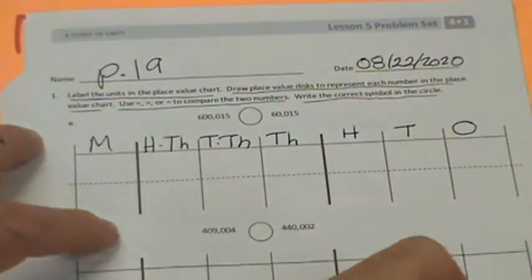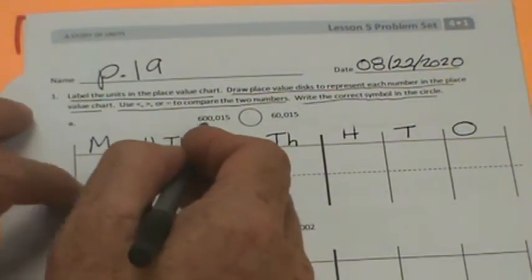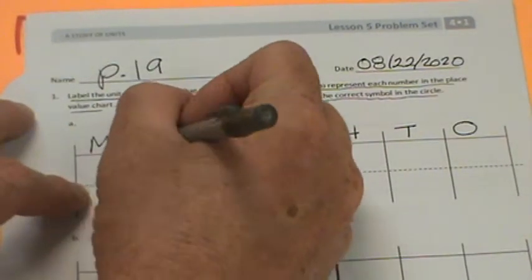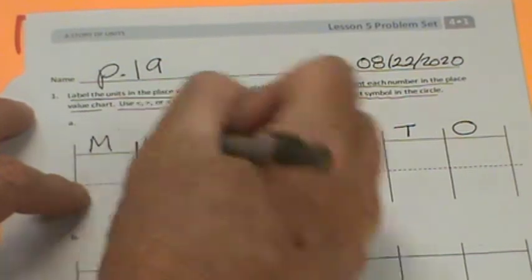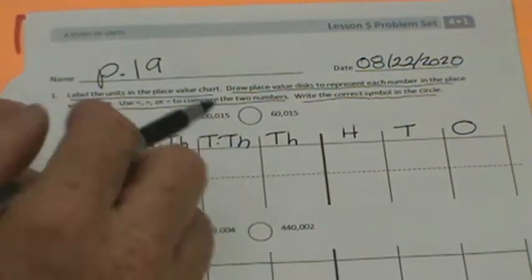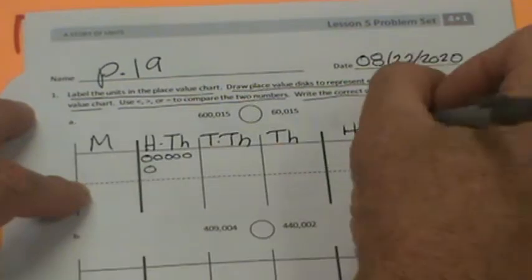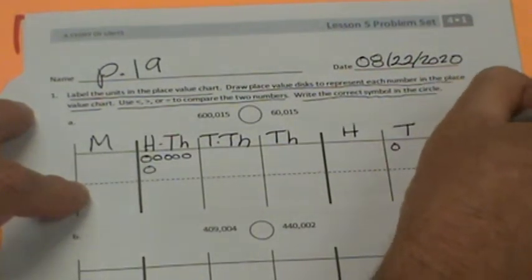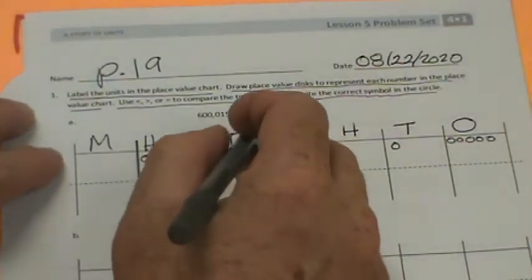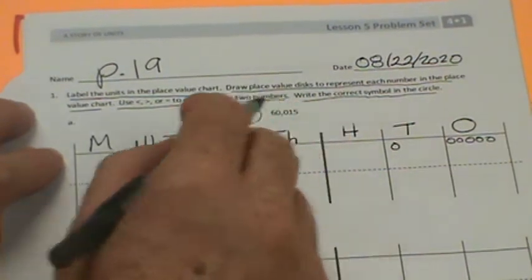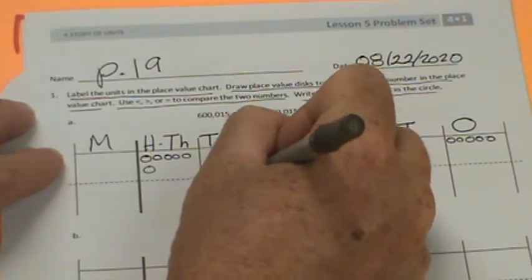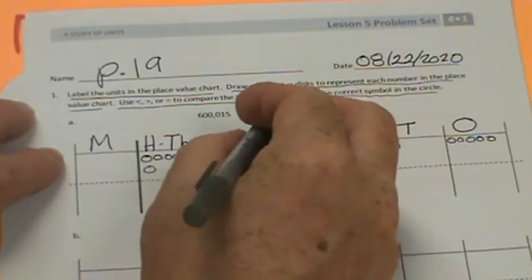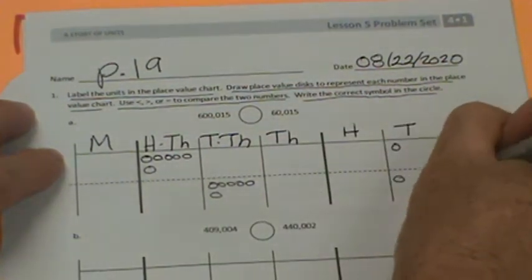Alright, so our first number is 600,000. So I'm going to put a six right here and then it goes zero, zero, zero, zeros all the way to 15. So that's one ten and five ones. The other one is 60,015, so six ten thousands and fifteen.